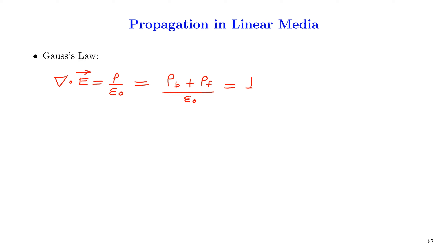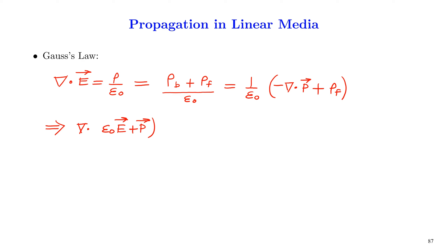So this is equal to 1/ε₀ times (ρ_b + ρ_f). The bound charge density ρ_b can be written as −del·P. Therefore, we get del·(ε₀E + P) = ρ_f.